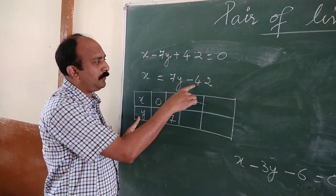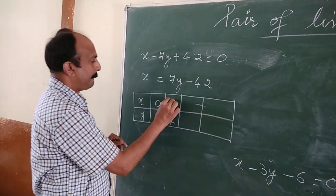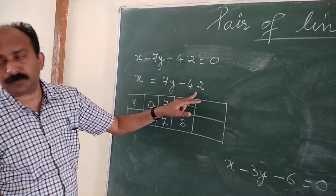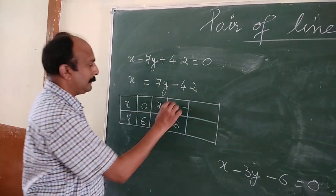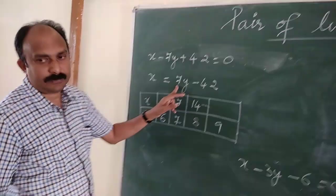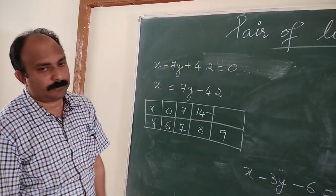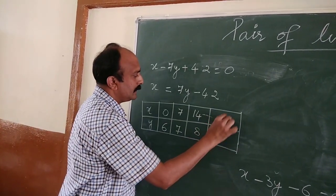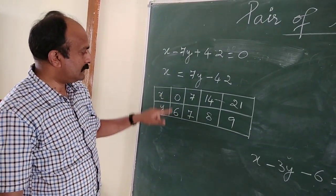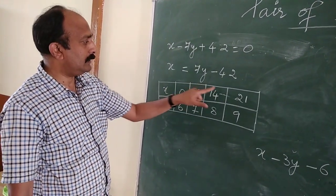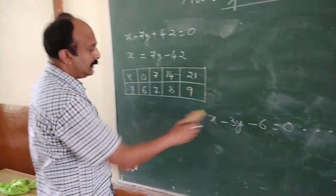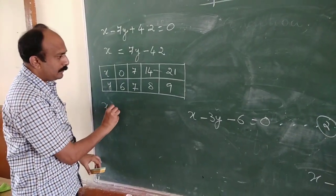Taking y equals 8: x equals 56 minus 42 equals 14. Taking y equals 9: x equals 63 minus 42 equals 21. So we have four sets of solutions for the first equation: (0,6), (7,7), (14,8), (21,9).